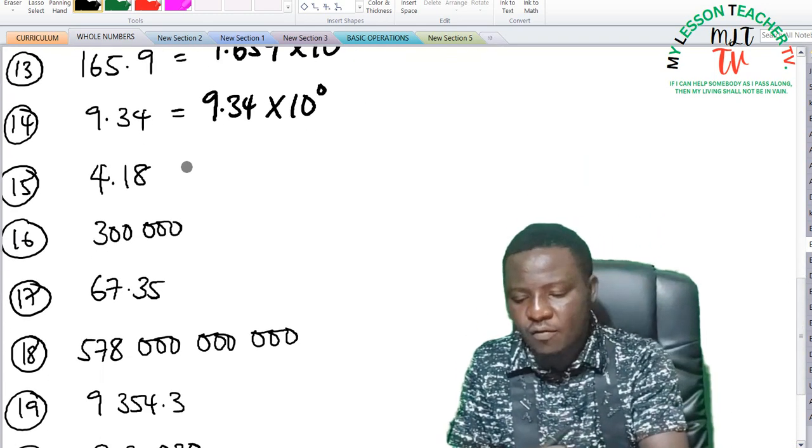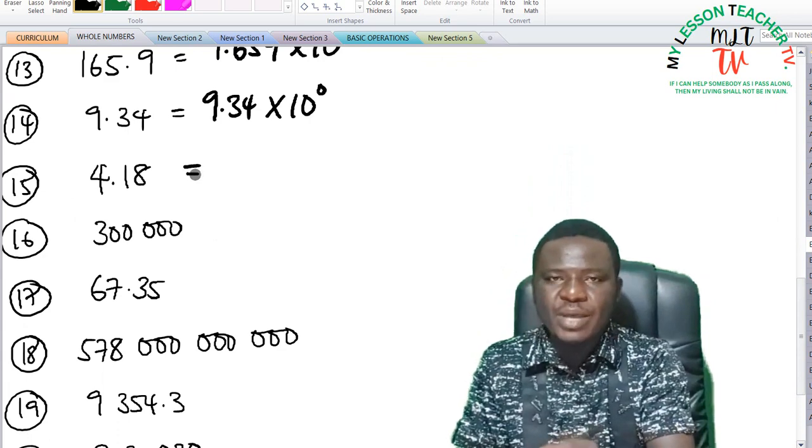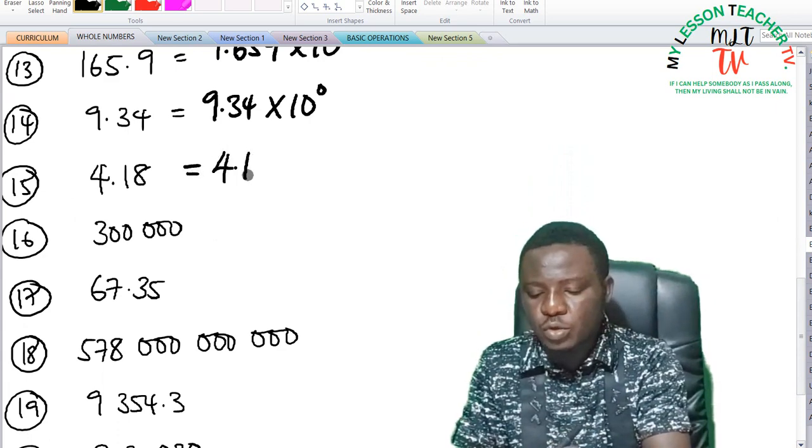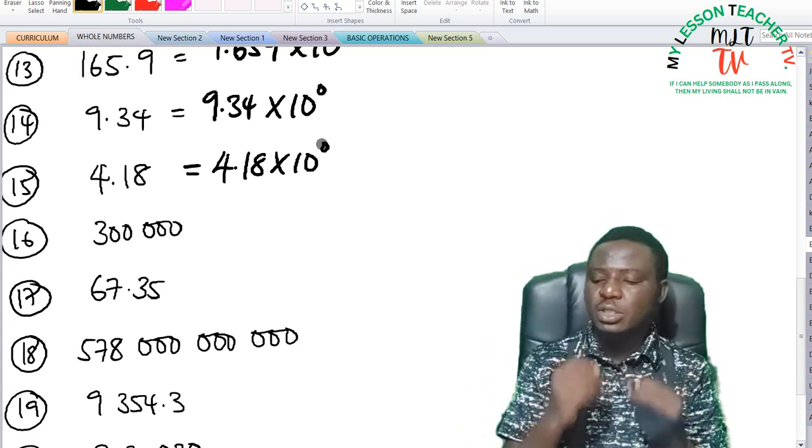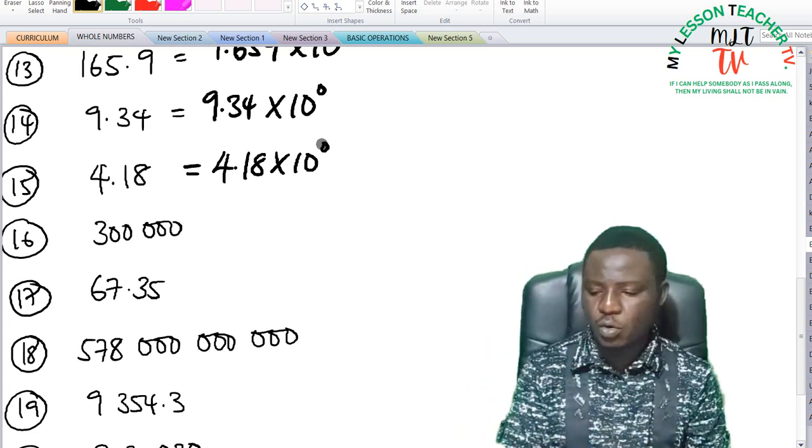Question 15, 4.18 can be expressed as 4.18 times 10 raised to the power of 0, same reasons as I gave you in number 14.